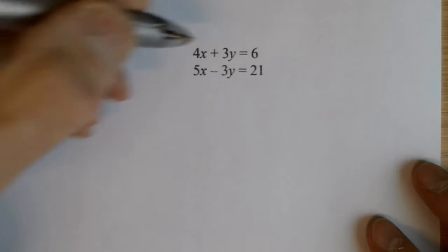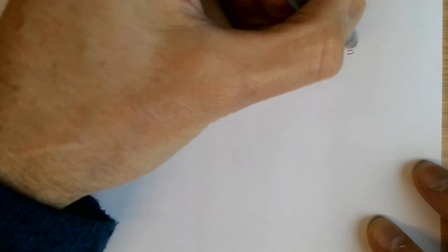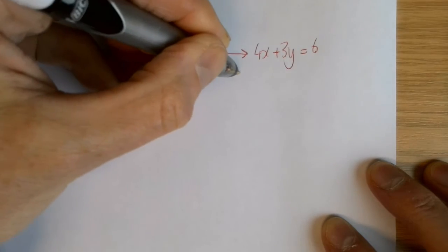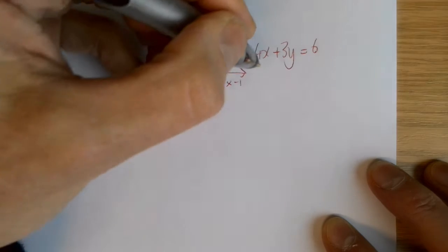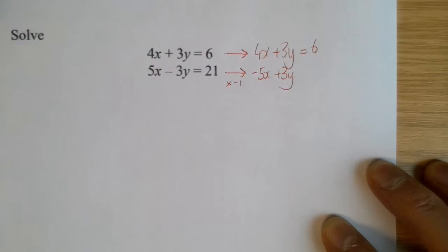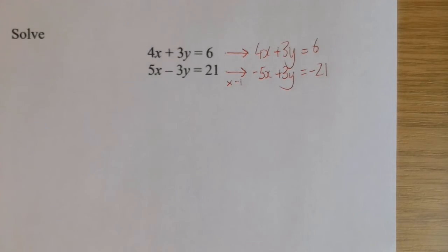So with this one, I'm going to leave that equation. And I'm going to multiply the second equation by my friend minus 1. And you know I love multiplying by minus 1 because it just changes the sign of everything. You must remember to multiply everything by minus 1.